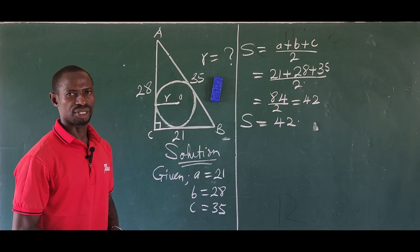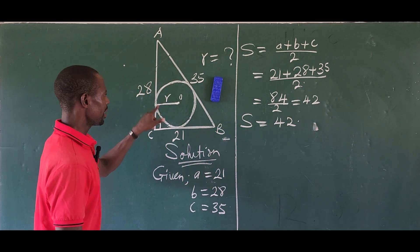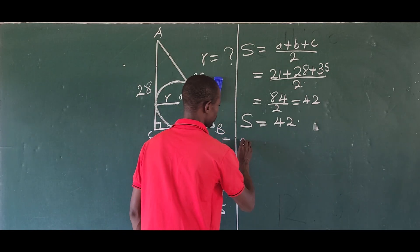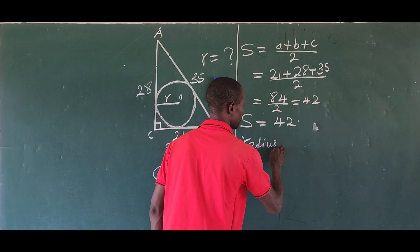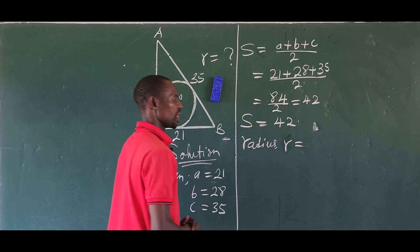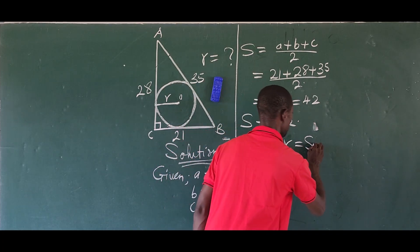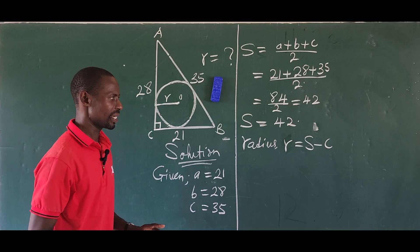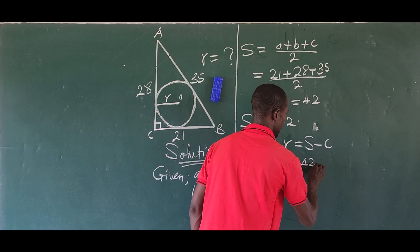Here comes the relationship that exists between the semi-perimeter and the radius inscribed. Our radius r will be equal to s minus c, the semi-perimeter minus side c. So s is 42 and our side c is 35.